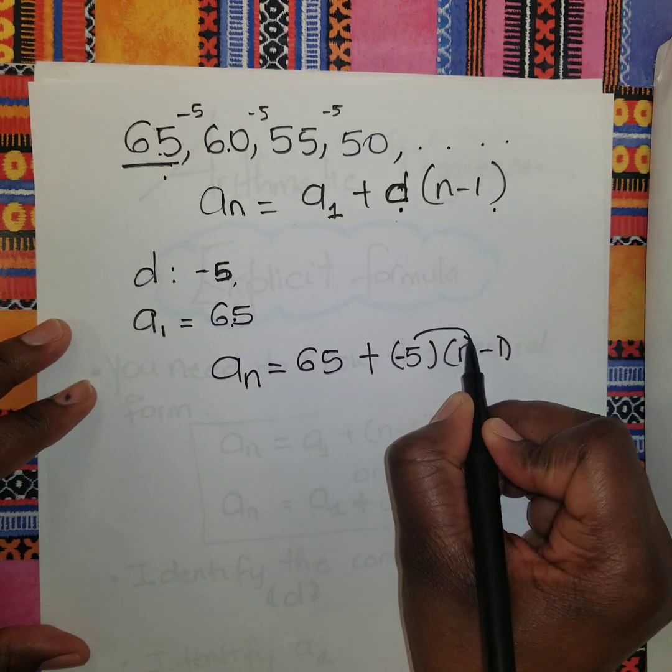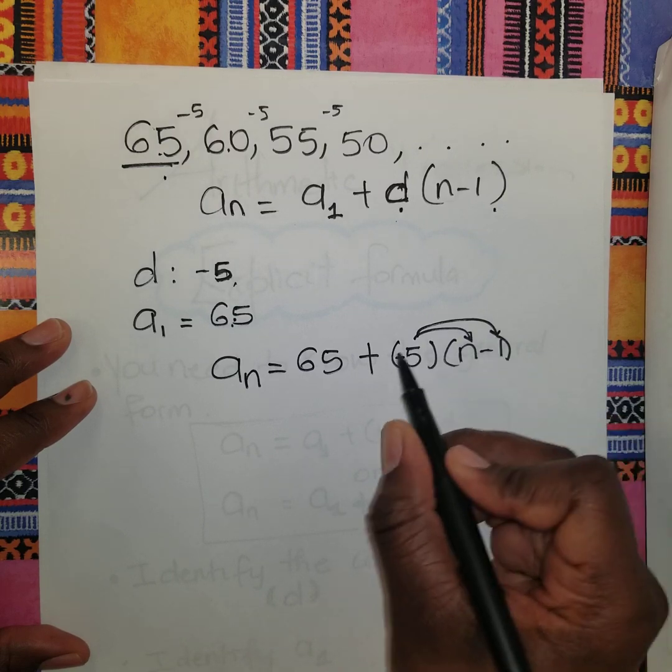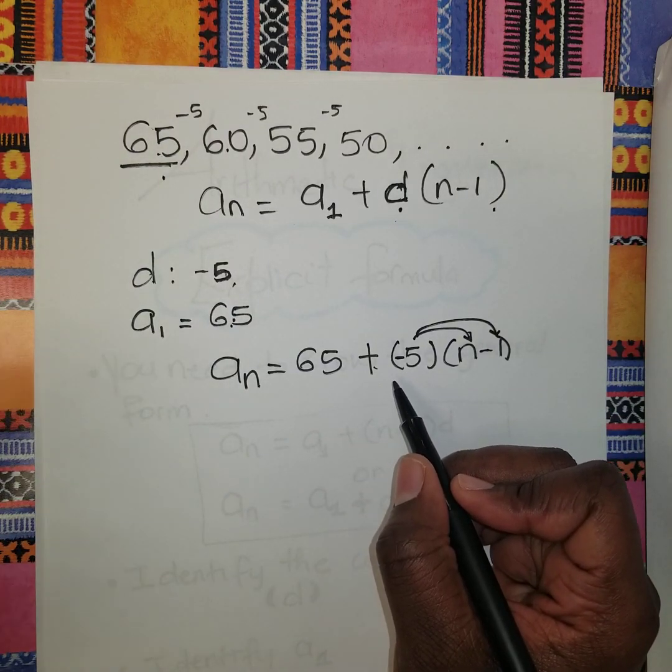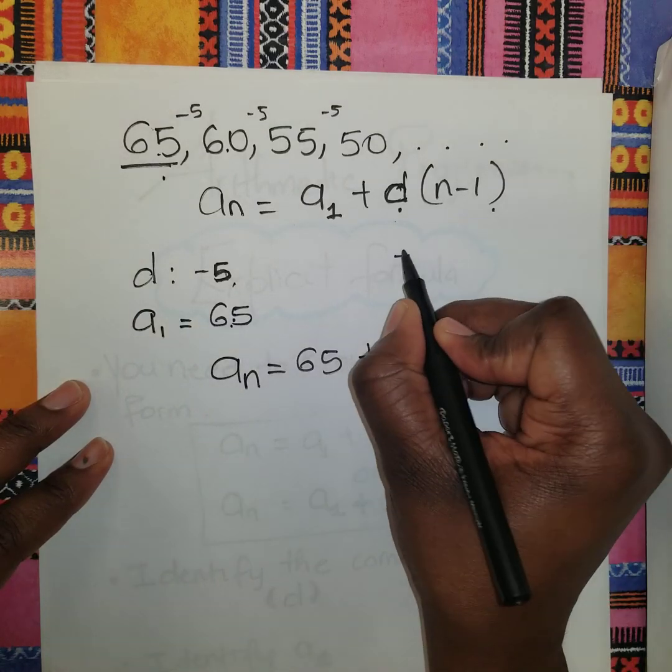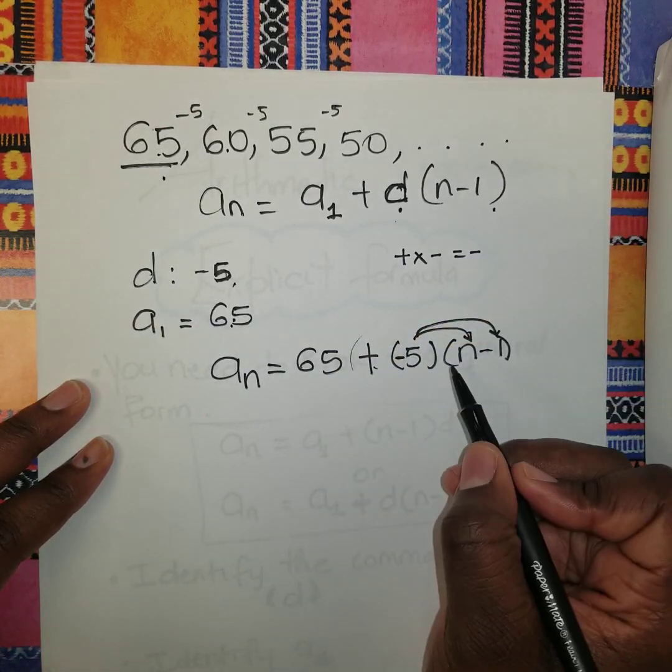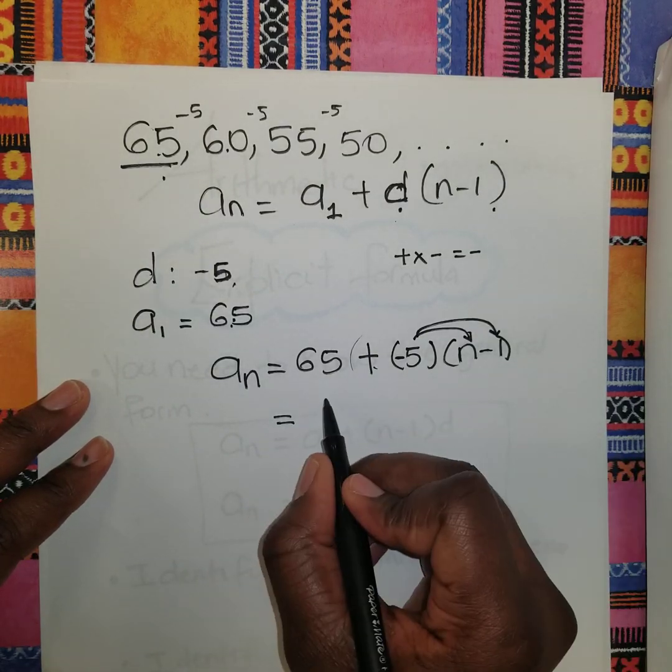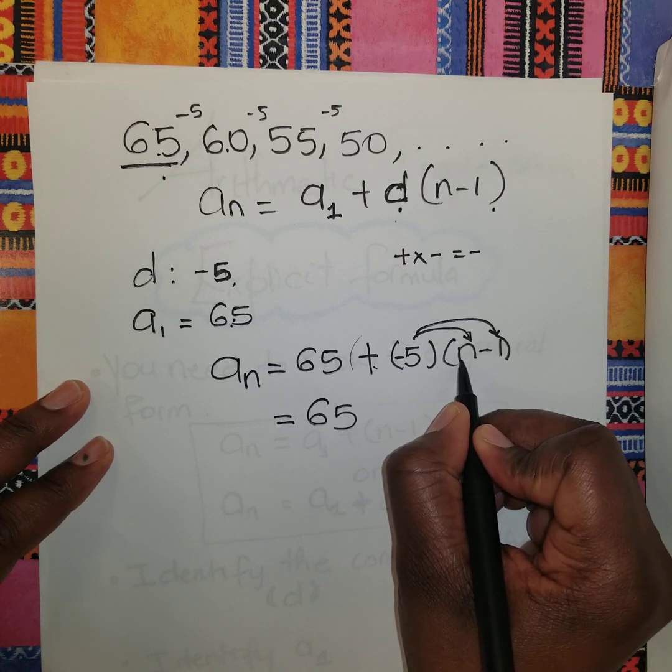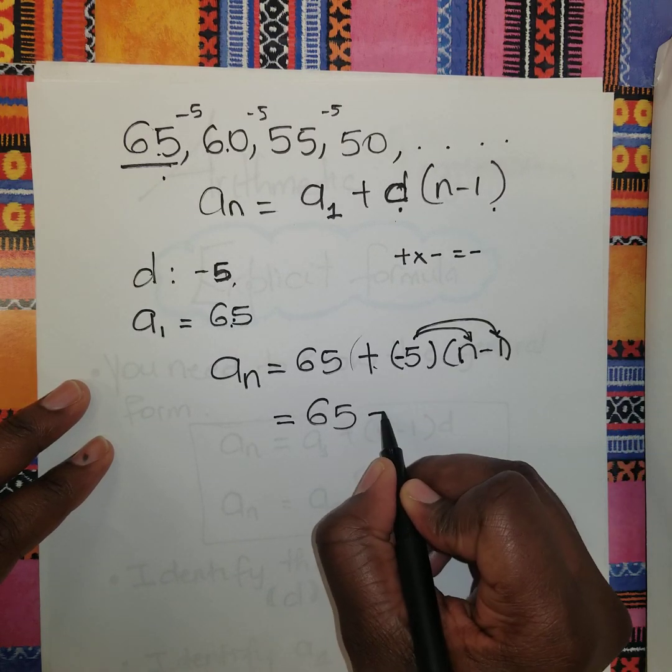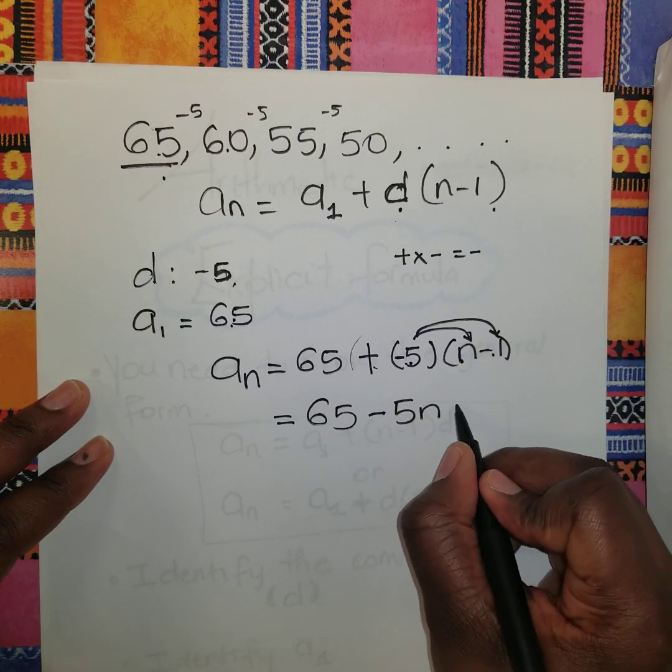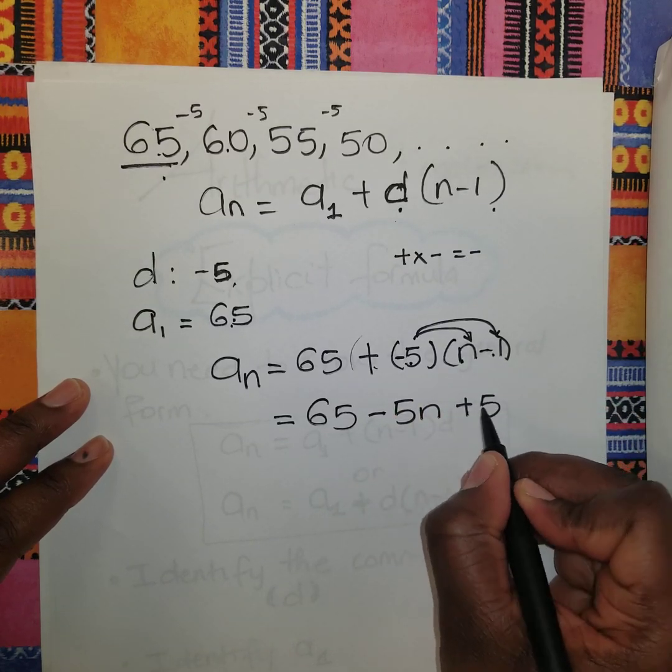We distribute the bracket to simplify. I put the 5 in brackets here because the rule for integers: negative times positive equals negative. So -5 times n is -5n, and -5 times -1 is +5.